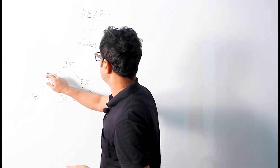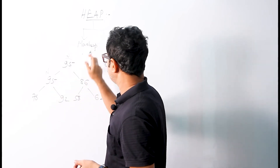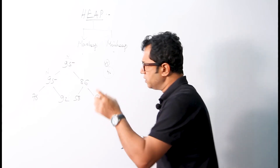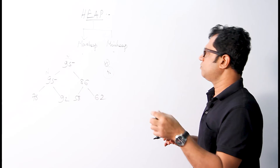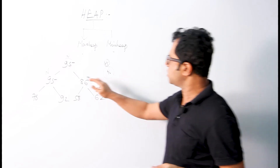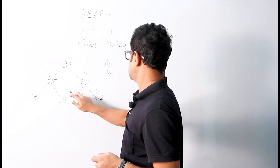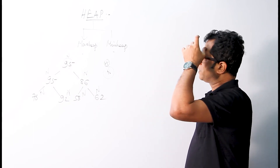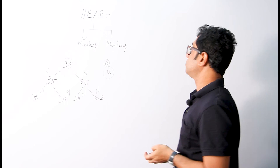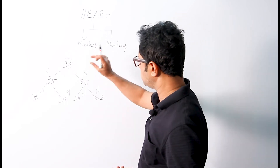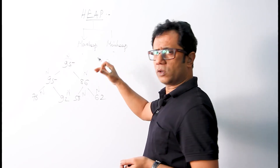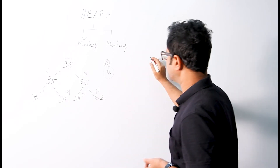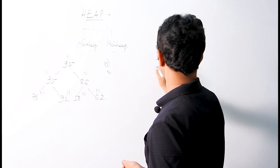So this entire data structure is nothing but a Max Heap, because for each node considered as N, each node has a value which is either greater than or equal to the values of its children. This definition holds for each node of this heap. Min Heap is just the reverse — where each node N of the heap is always less than or equal to the values of its children.